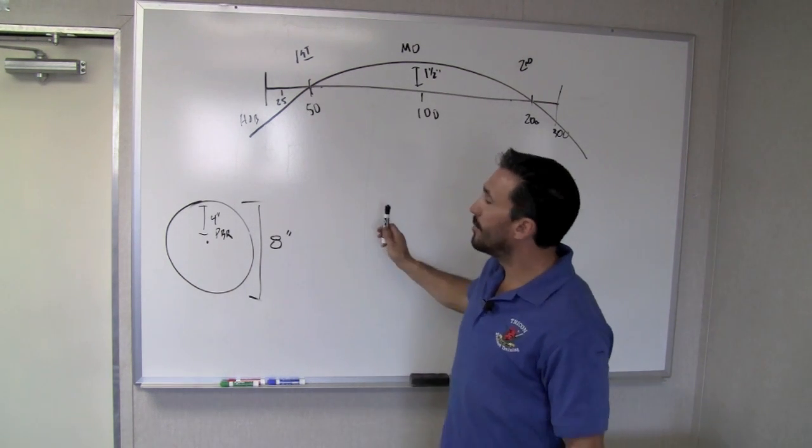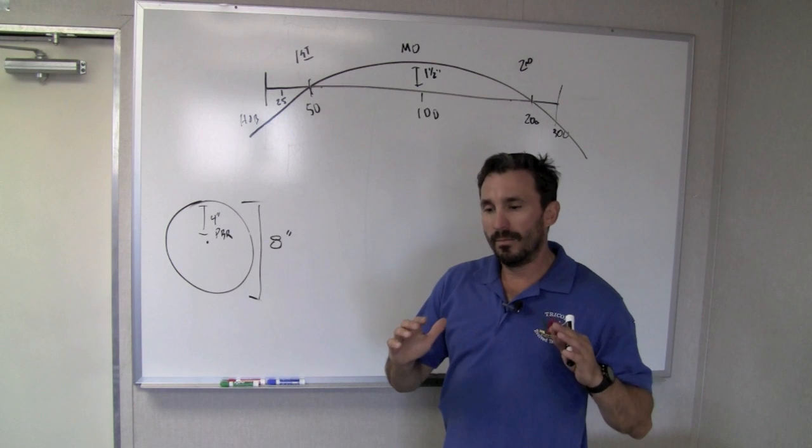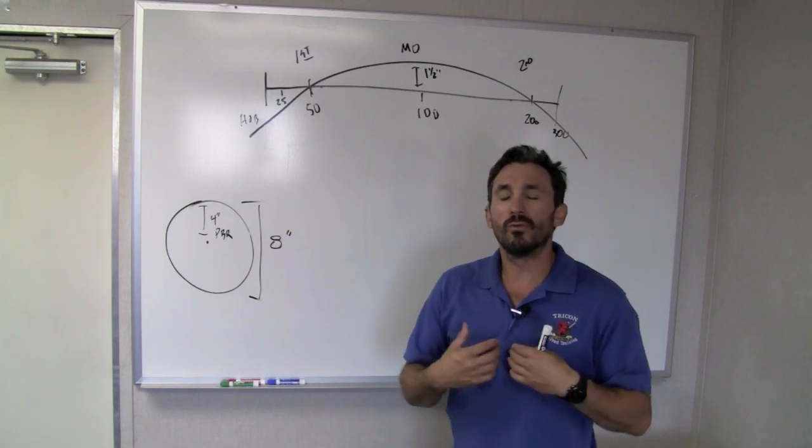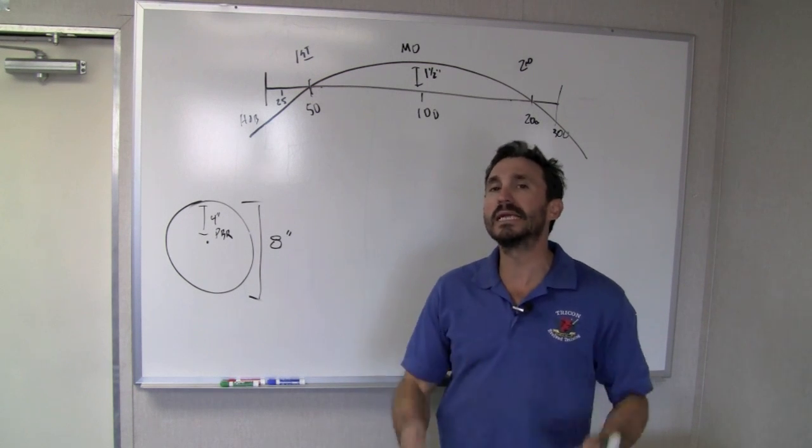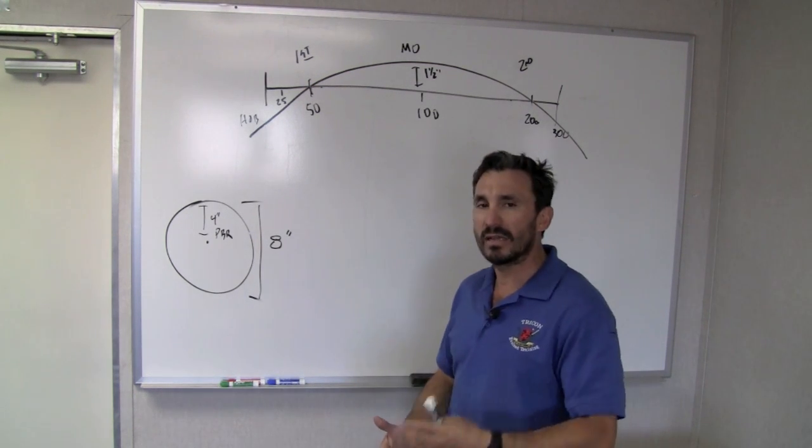So, again, hopefully that explains it. It gives you just a bare bones understanding of what you need to be doing and why we sit here and try to encourage students to start off with a 50-yard zero because it's really easy. It's easy for us to get it on paper.